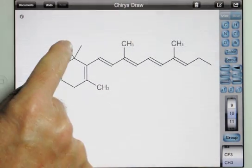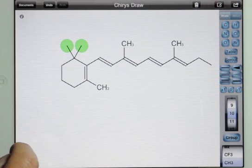You can change the element or change to a group by highlighting one or both atoms.